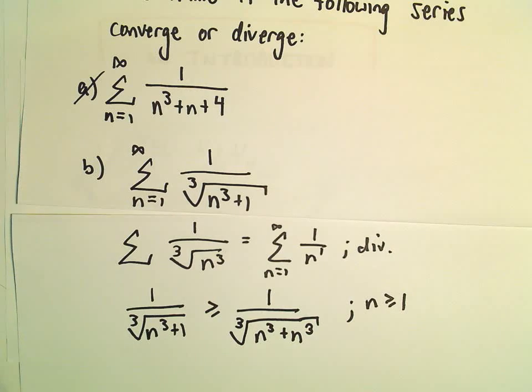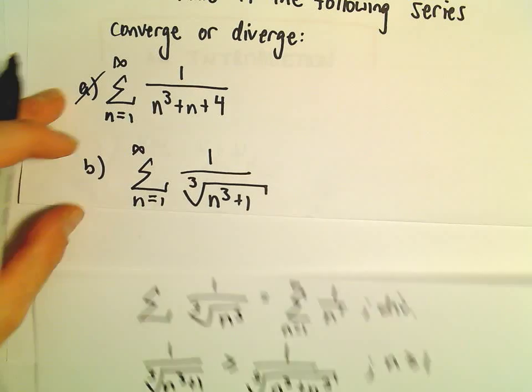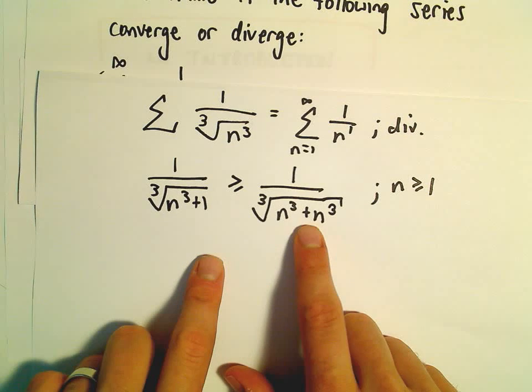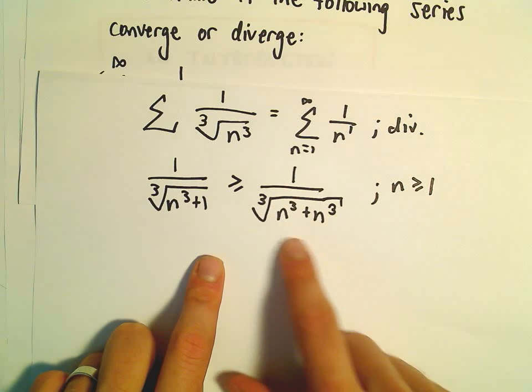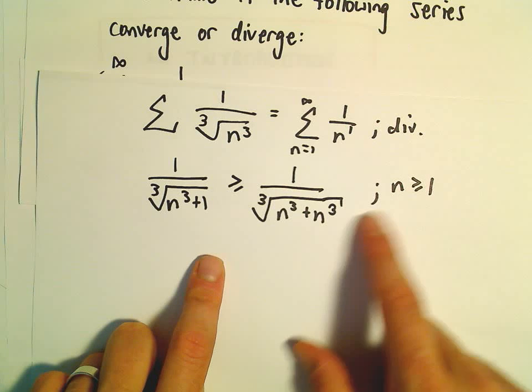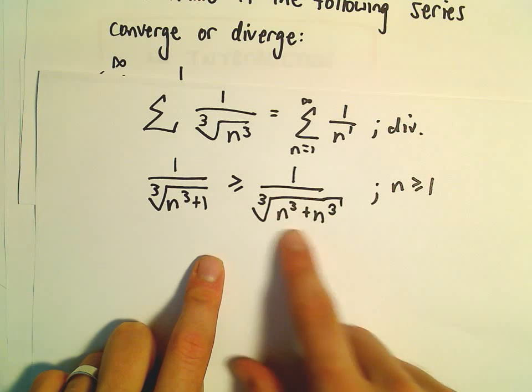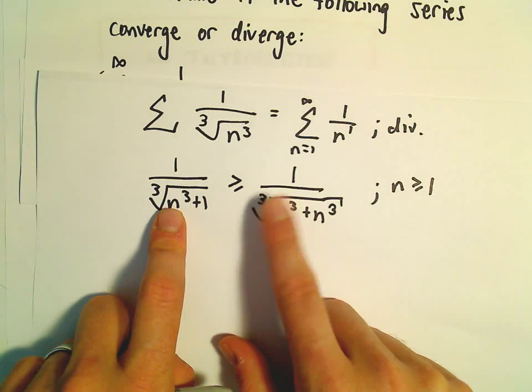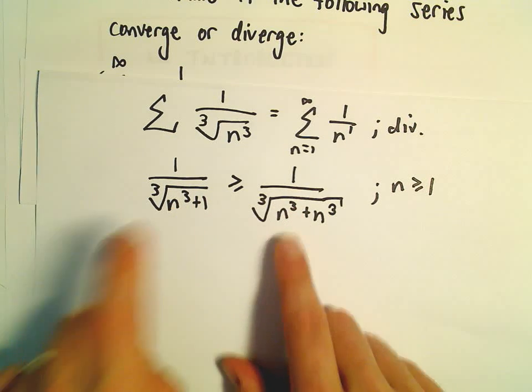We're looking at values of n greater than or equal to 1. n cubed plus n cubed is going to be a larger value, except for n equals 1. If we take anything greater than 1, the denominator on the right side will be much bigger than the denominator on the left side. That makes the fraction on the right side smaller.